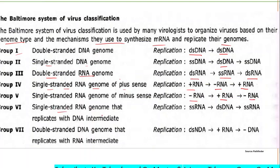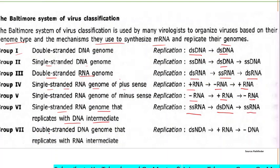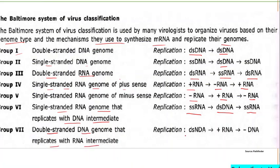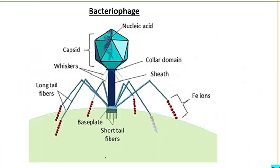Group 6 involves single-stranded RNA genomes that replicate with a DNA intermediate: single-stranded RNA produces double-stranded DNA, which again forms single-stranded RNA. Group 7 includes double-stranded DNA genomes that replicate with an RNA intermediate: double-stranded DNA first forms RNA, then negative-sense DNA is regenerated.